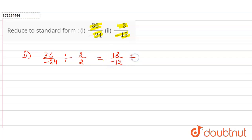Now again we can divide it by 2. So 18 divided by 2 is 9 and minus 12 divided by 2 is minus 6. Now we can divide this by 3, right? So 9 divided by 3 is 3 and minus 6 divided by 3 is minus 2.